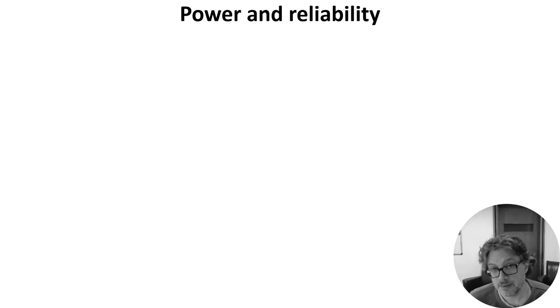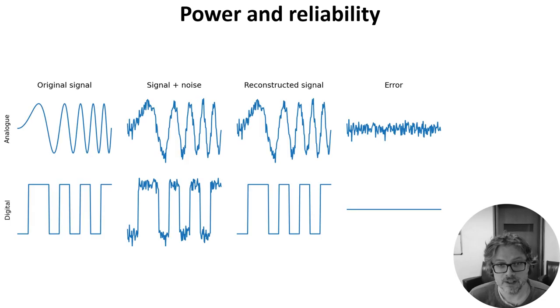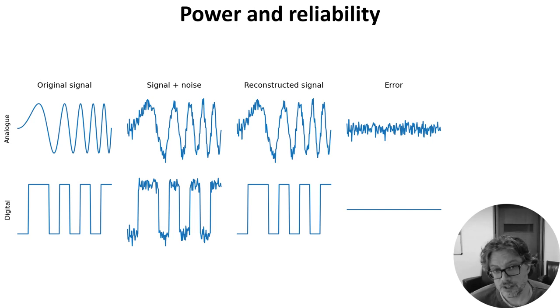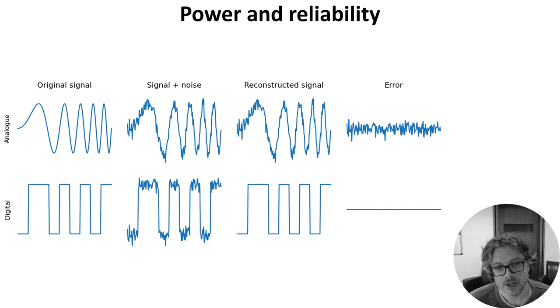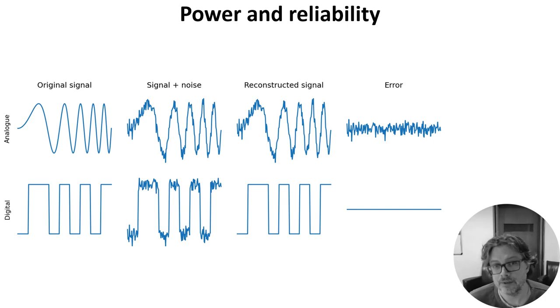The first argument is that the main function of spikes is just that they're an energy efficient mechanism for reliably sending signals along a long wire. That's basically the reason why digital is often preferred to analog in communications and computing. You can reconstruct a digital signal perfectly, even in somewhat noisy conditions, but noise will always degrade an analog signal.